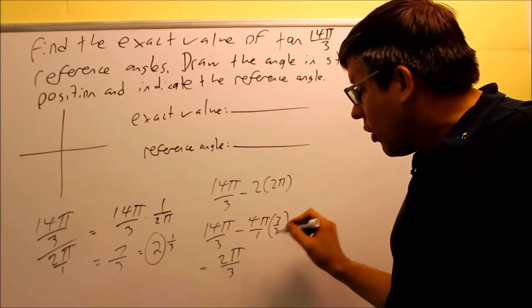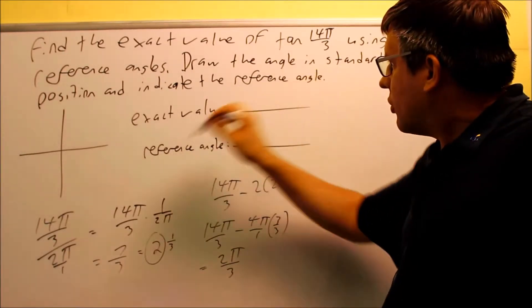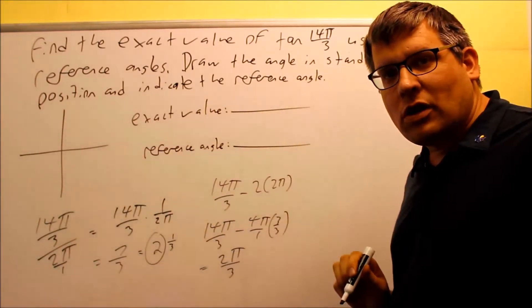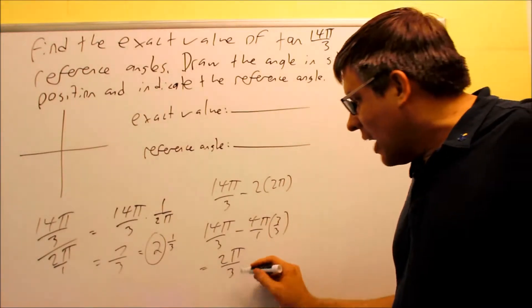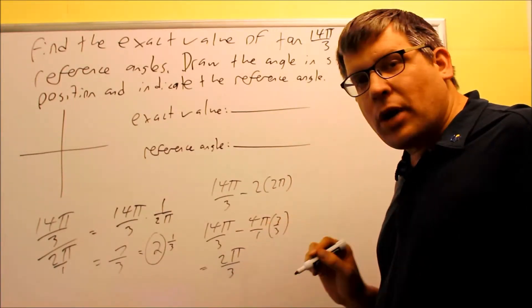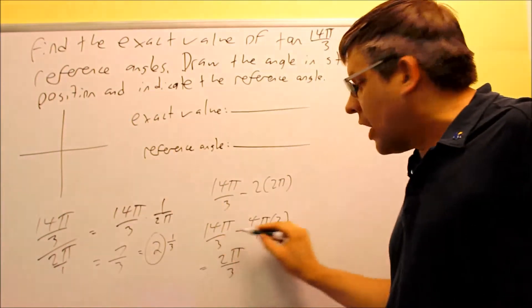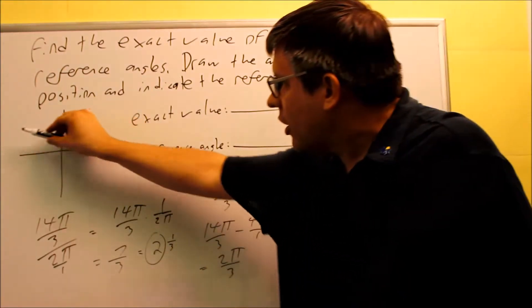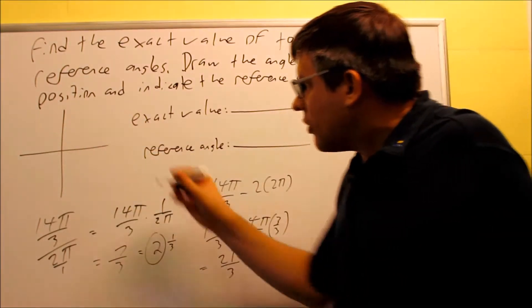Now, I want to draw this in standard position because that's what originally the question asked for. I need to go around 2 revolutions and then I'm going to go to 2π over 3. Now, 2π over 3, remember that this is π over 2 and this is π, so I know that 2π over 3 is going to fall in the second quadrant. Okay, so I'm going to go ahead and draw this.